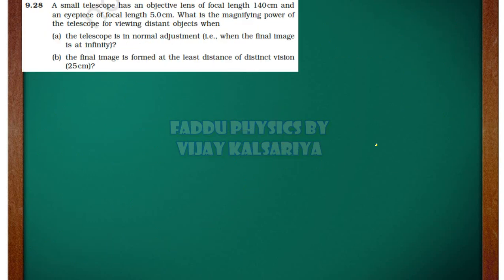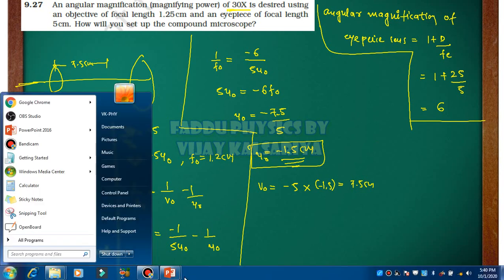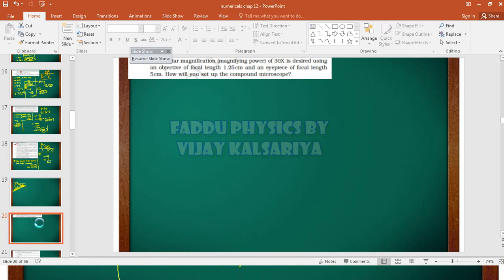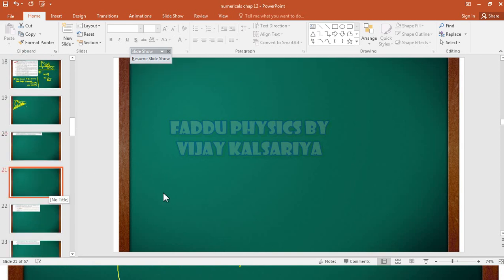Now we are talking about the eyepiece lens. For eyepiece lens, 1 by fe is equal to 1 by v2 minus 1 by u2. So 1 by u2 is equal to 1 by v2 minus 1 by f. So 1 by u2 is equal to minus 1 by 25 minus 1 by 5.